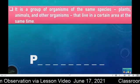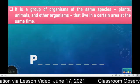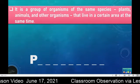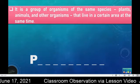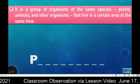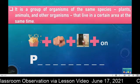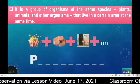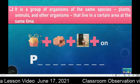Before we proceed to our lesson proper, let us guess this word. This word is defined as a group of organisms of the same species — plants, animals, and other organisms — that live in a certain area at the same time. There are a set of images here. When you combine these images, it will form the word. I'm going to give you 5 seconds to think of this word that starts with letter P.